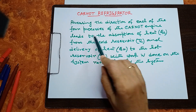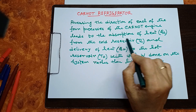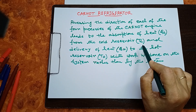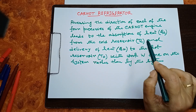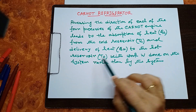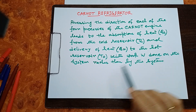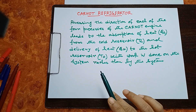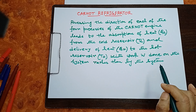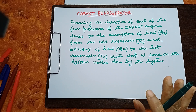Reversing the direction of each of the four processes of the Carnot engine leads to the absorption of heat QC from the cold reservoir at temperature TC, and delivery of heat QH to the hot reservoir where the temperature is TH, with work W done on the system. Here, work is done on the system — compression is done first, rather than by the system. Then it is acting as a Carnot Refrigerator.